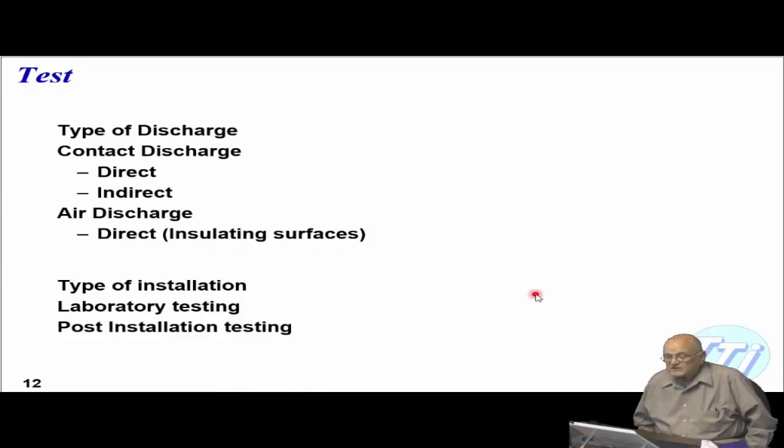So the types of tests that you're going to perform is basically the type of discharge, whether it's a contact discharge, indirect or direct. Indirect would be you make a contact somewhere near it and it goes through an auxiliary path. Direct is where you're actually discharging directly on the device. If you've got a plastic kind of case, you can't do it direct very easily, can you? Or indirect. You might check it to see if there's any kind of problems. Of course, the air discharge is done directly on insulated surfaces such as a plastic device.